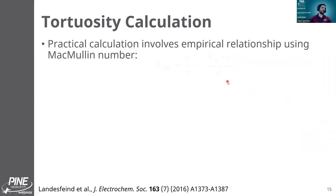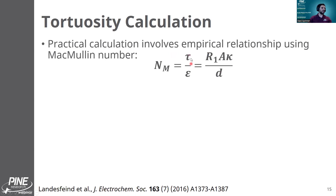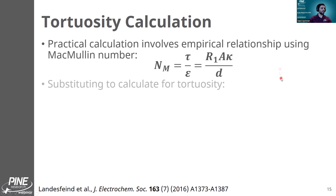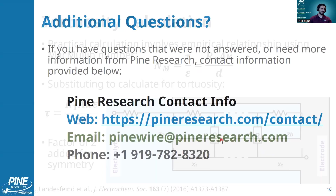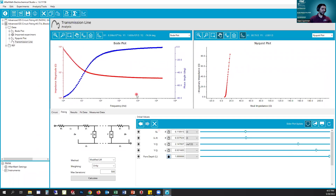Practically calculating tortuosity involves a dimensionless quantity called the McMullen number. This method is described in a paper by Landesfeind from the Huber-Gasteiger group in Germany — I encourage you to look at that paper if this is of interest to you. Essentially, the ratio of tortuosity to porosity is equal to an expression involving the resistance R1 from the circuit fit, along with the surface area, conductivity, and thickness of the electrode. We then substitute to calculate tortuosity, with a factor of two added for symmetry as described in that paper. The R1 here is this X1 from the transmission line, so the circuit fit allows us to calculate the tortuosity.